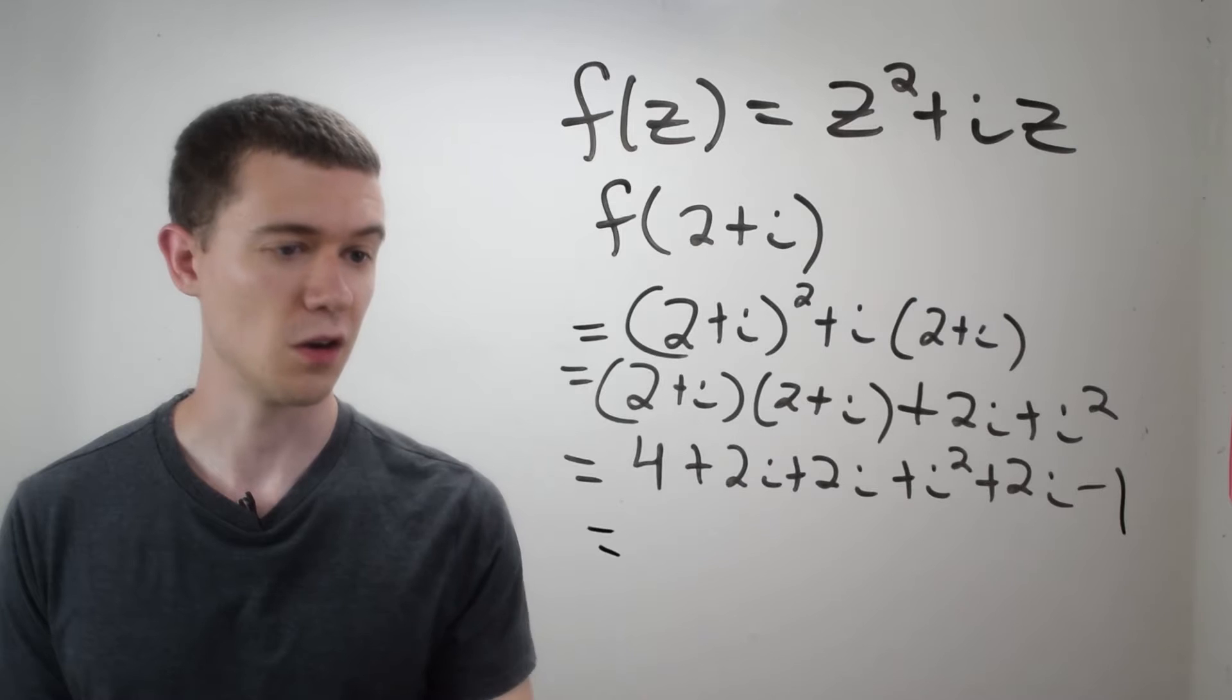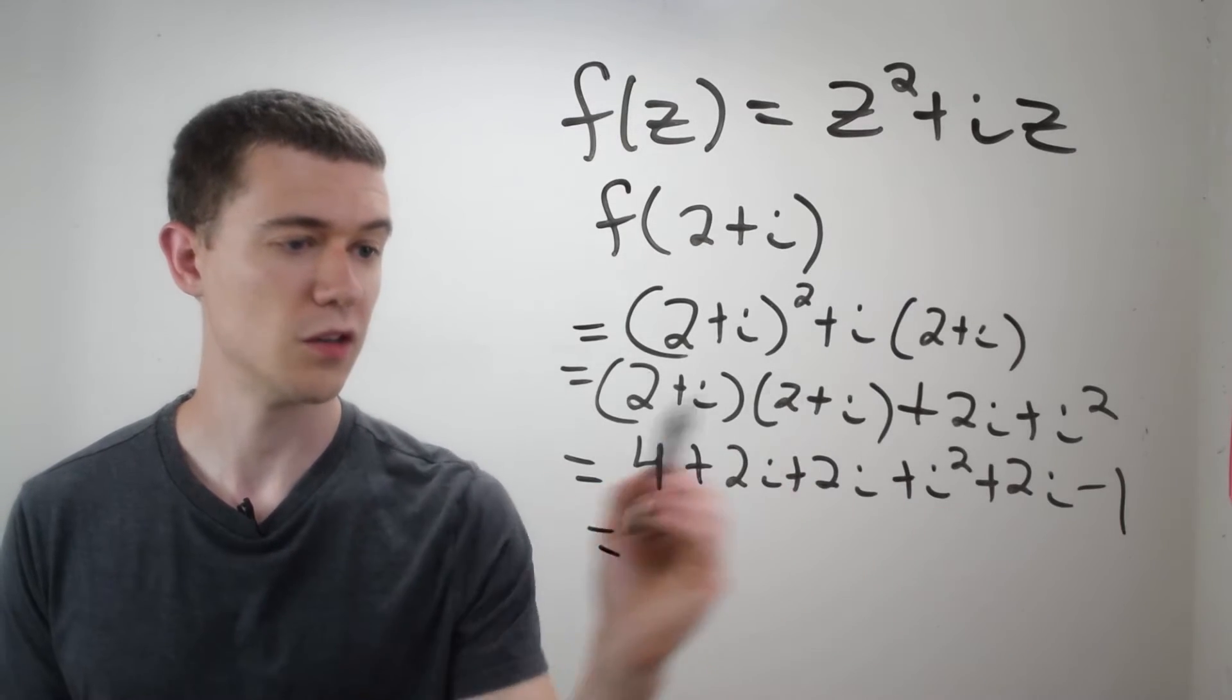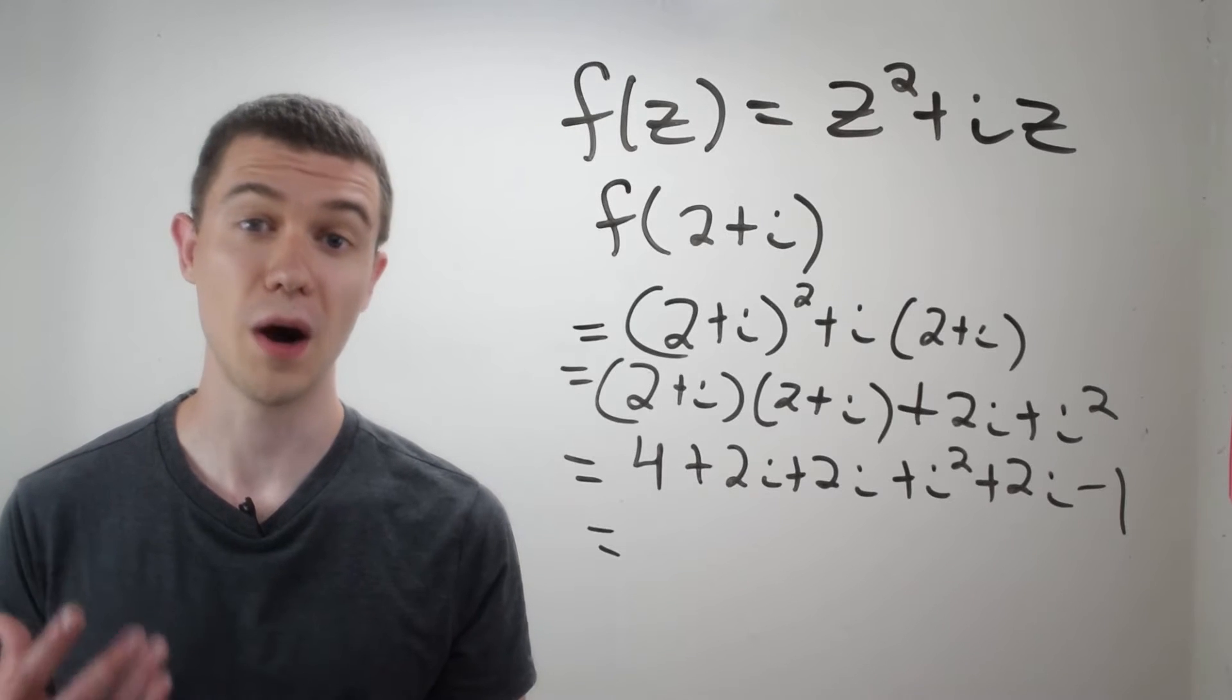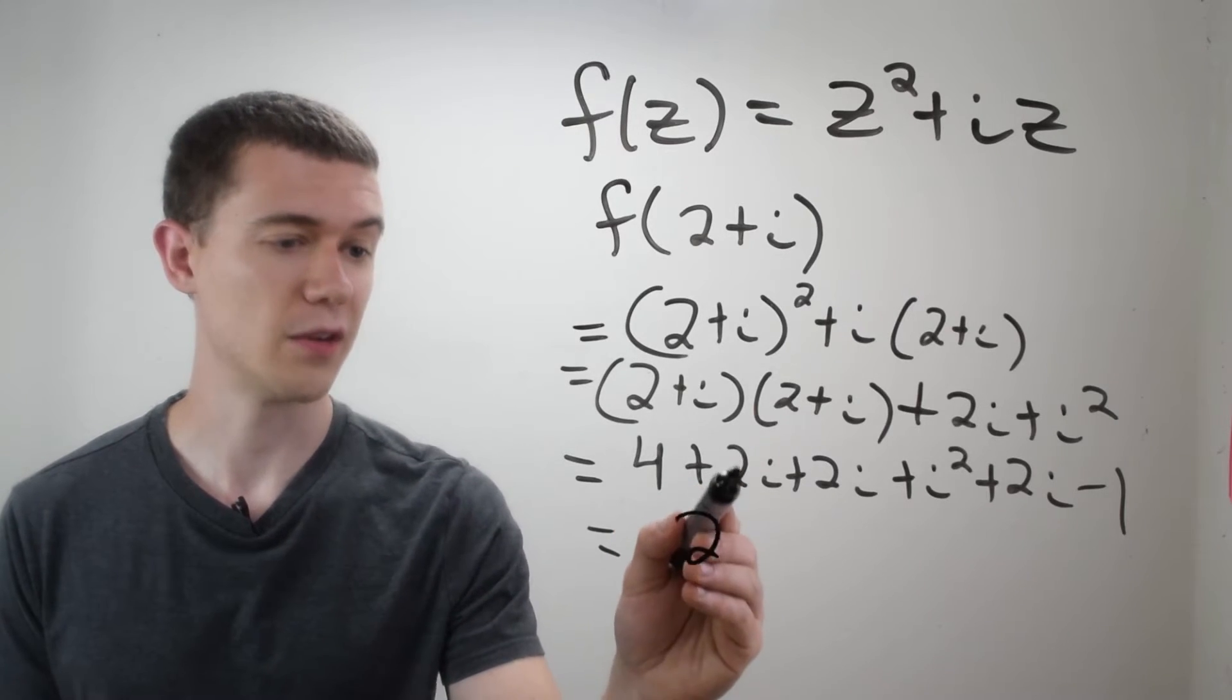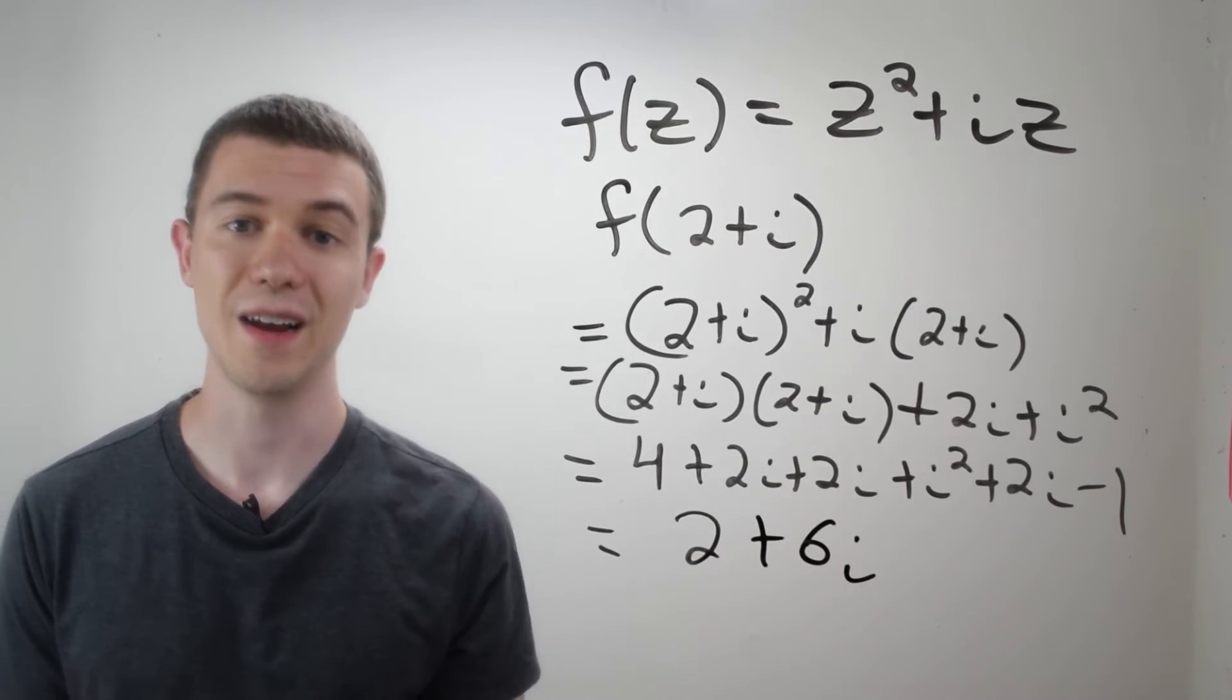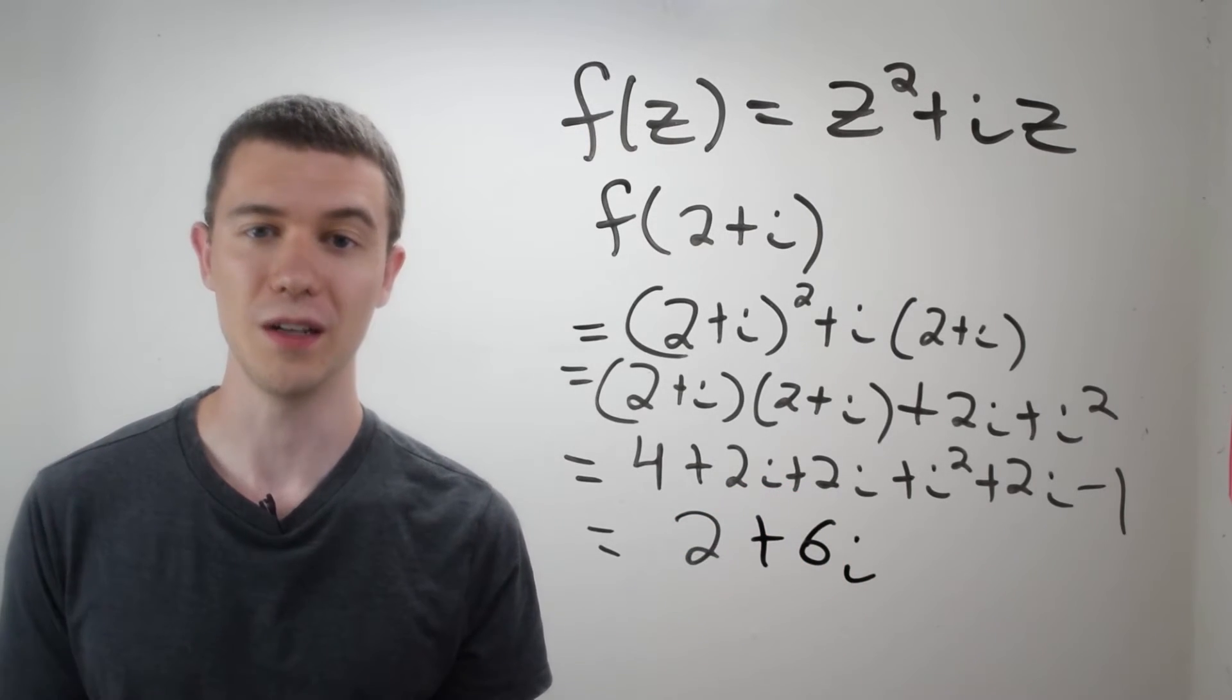And now I'm just combining like terms. So I've got 4 minus 1 is 3. I've also got an i squared there. That'll be another minus 1. So the real part is 2. And then I've got 2 plus 2 plus 2 equal to 6i. There's another example of evaluating this function.